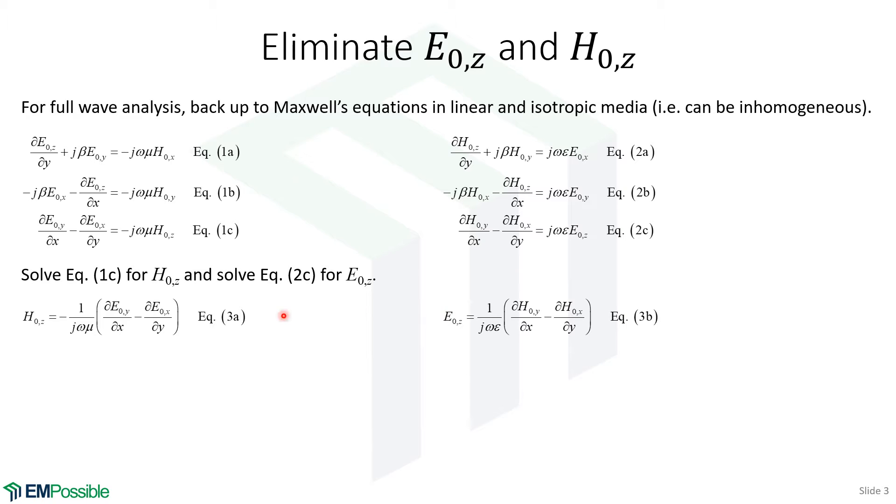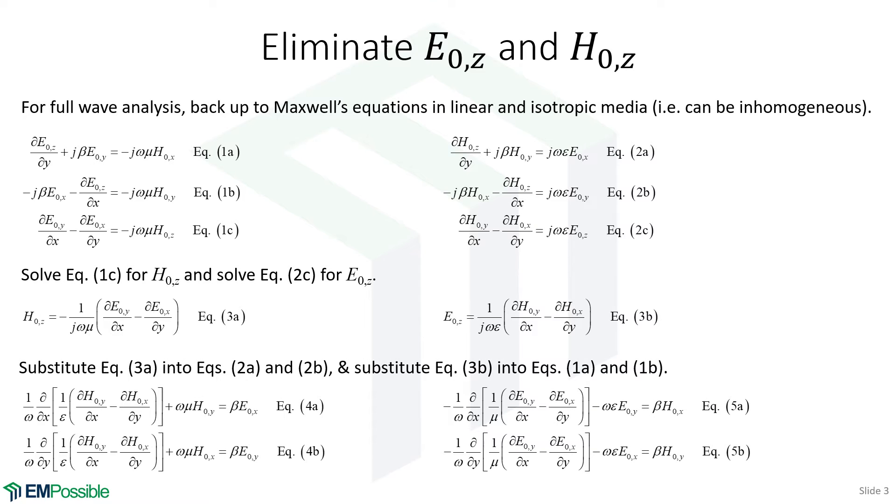From there, we'll take these two equations, and we'll come up to these top four equations. And any time there's an E0z or an H0z, we'll substitute in those expressions. When we do that, we will have algebraically eliminated all longitudinal components. And we end up with a set of four equations just in terms of the tangential components.